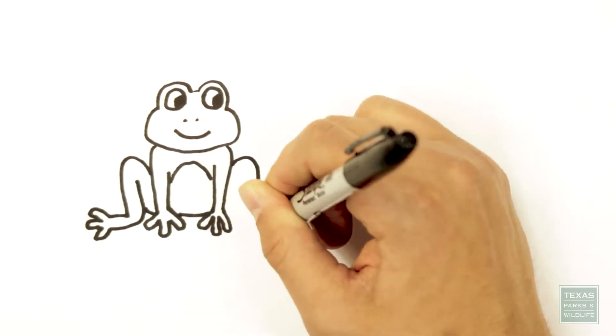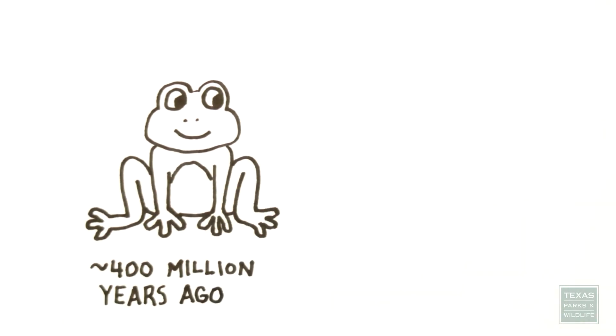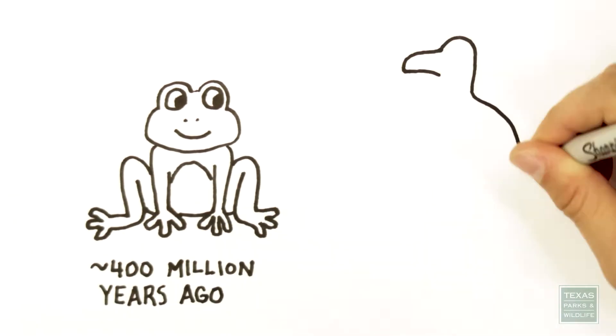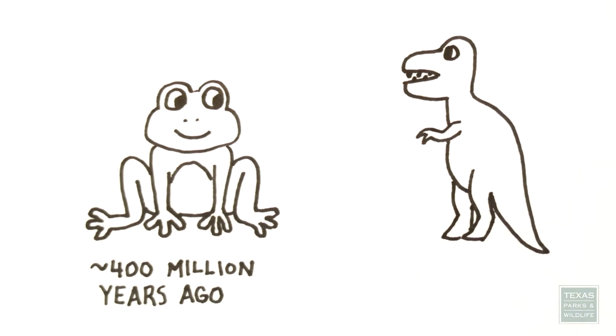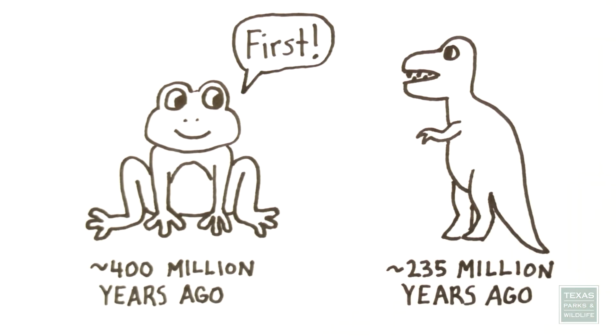Amphibians came into existence almost 400 million years ago, during the Devonian period of Earth's history. That means they appeared about 175 million years before dinosaurs, which later gave rise to reptiles, mammals, and birds.